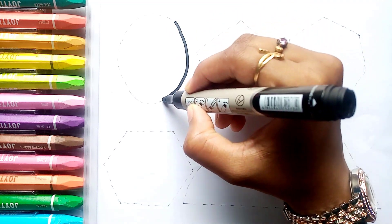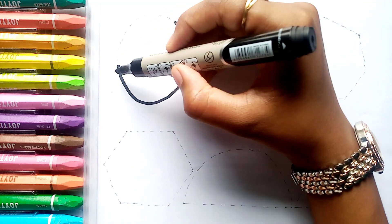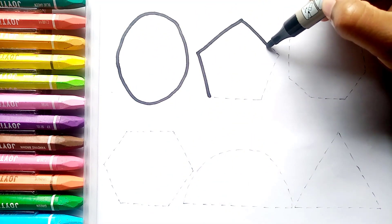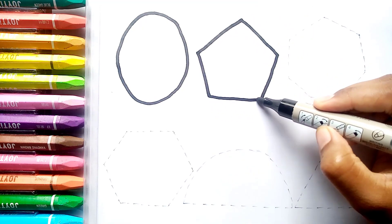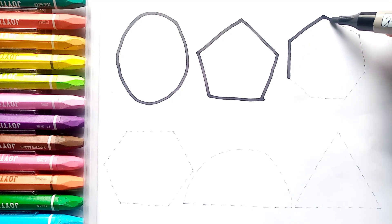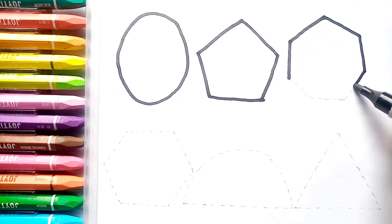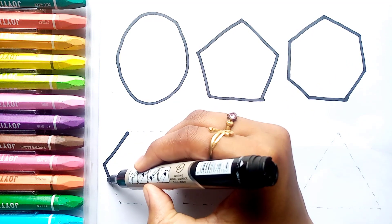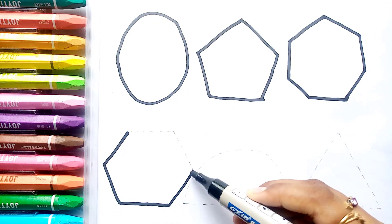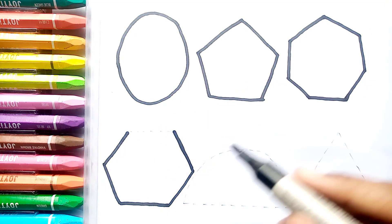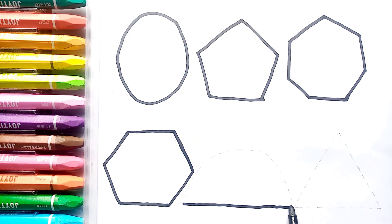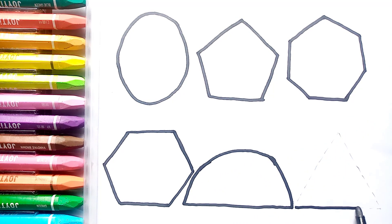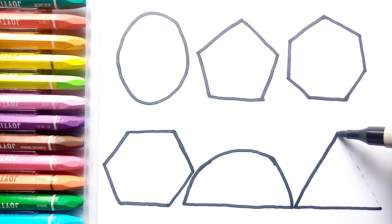Let's draw some shapes. Oval. Pentagon. Heptagon. Hexagon. Semicircle. Triangle.